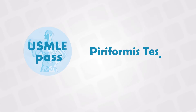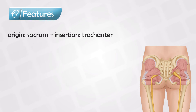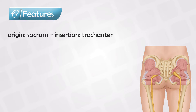Welcome back. In this video, we will talk about the piriformis muscle and the piriformis syndrome. The piriformis is a flat muscle found in the hip. This muscle originates from the anterior side of the sacrum and inserts into the superior aspect of the greater trochanter.